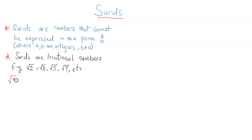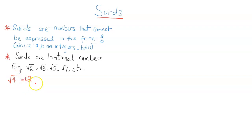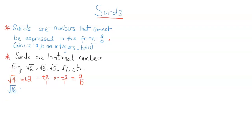Now, do we think the square root of 4 is a surd? It is underneath a square root, just like the previous expressions. But is it a surd or not? Of course it's not a surd, because the square root of 4 is positive or negative 2, which by this definition can be written as positive 2 over 1 or negative 2 over 1. So the square root of 4 can be written in the form a over b, and therefore it is not a surd.